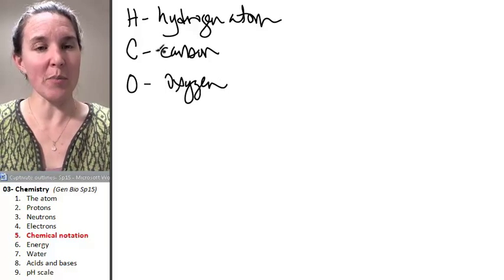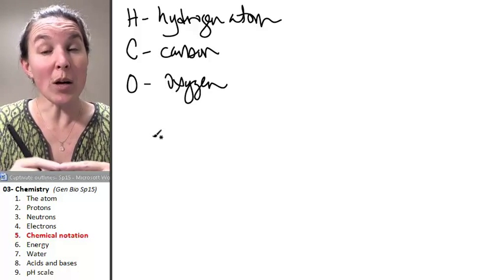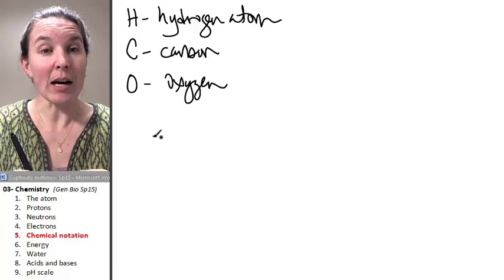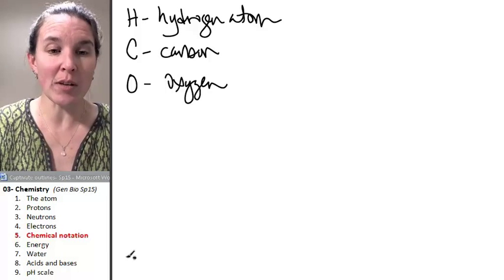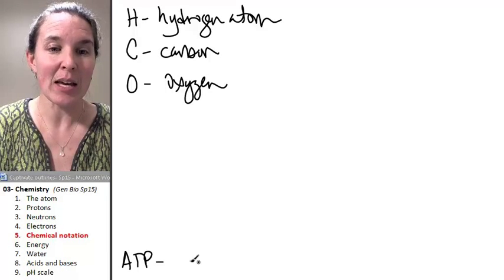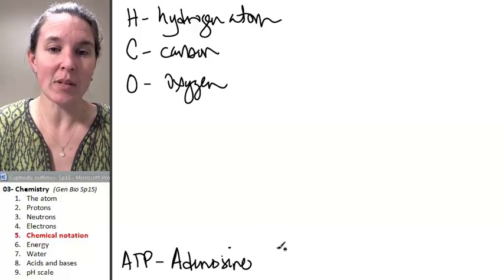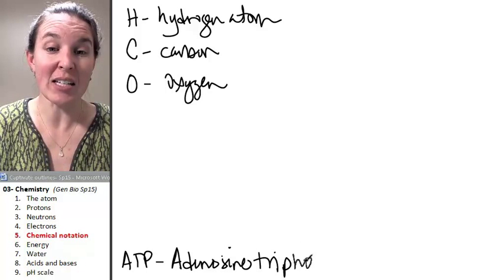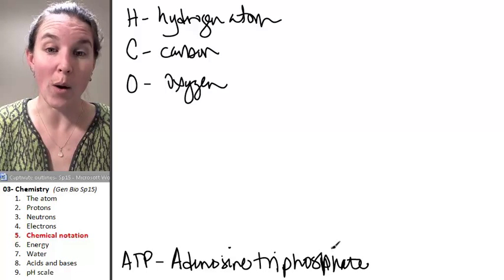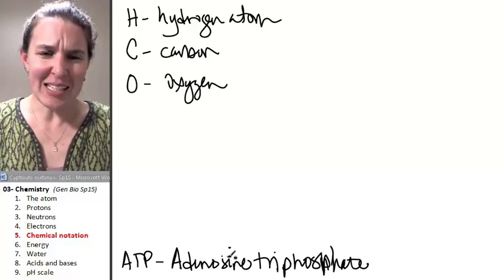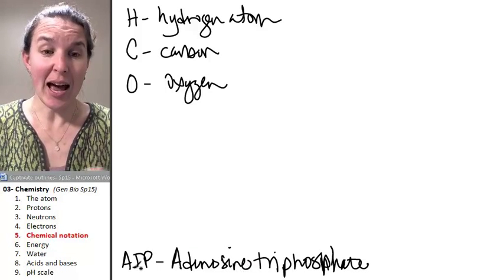These three in particular are probably ones that you want to be familiar with. You want to be aware when a letter is representing an element. I'm going to give you another example of something called ATP. This thing is adenosine triphosphate. Adenosine triphosphate is not an atom.